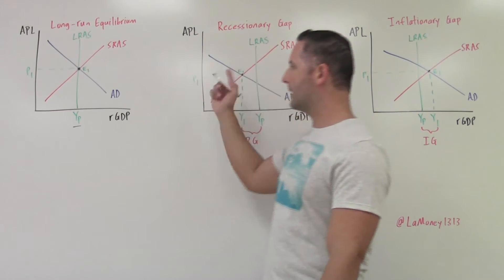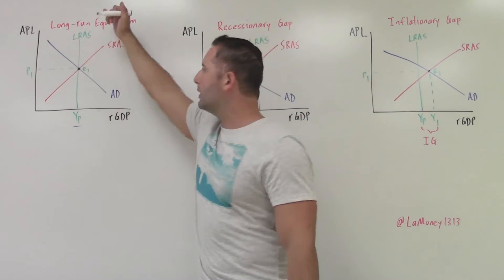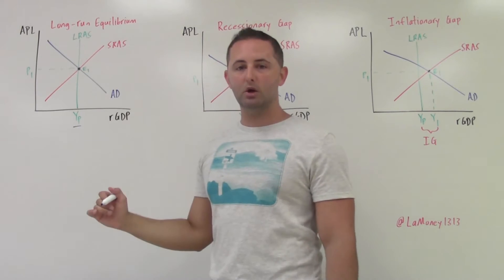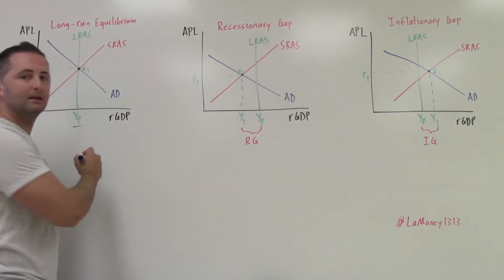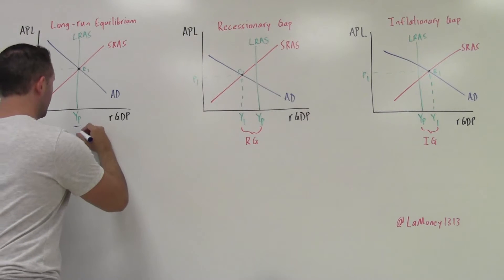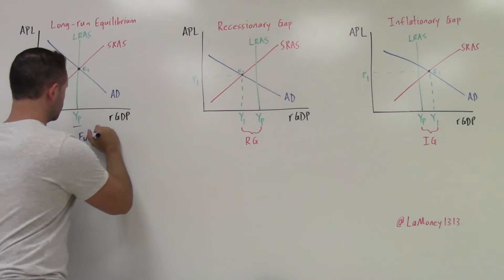Another thing that this means, and this is the important one that we're going to look at today, is that when we are operating anywhere along this LRAS curve, on potential output, what this means is that we are in a condition of full employment. So I'm going to put that there.